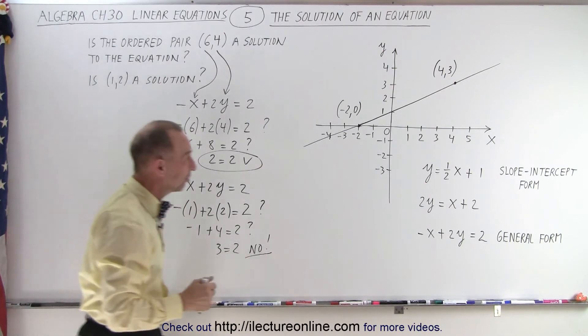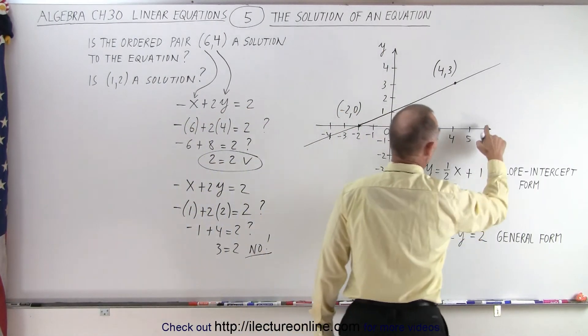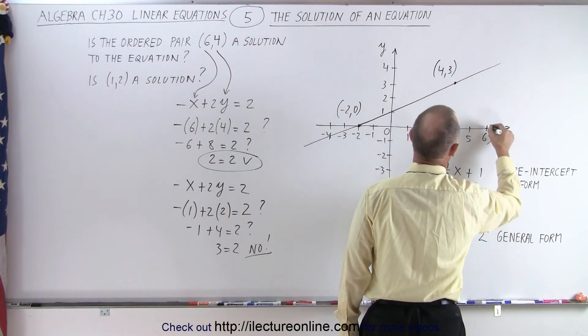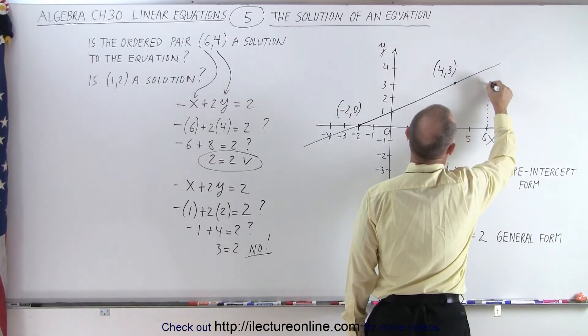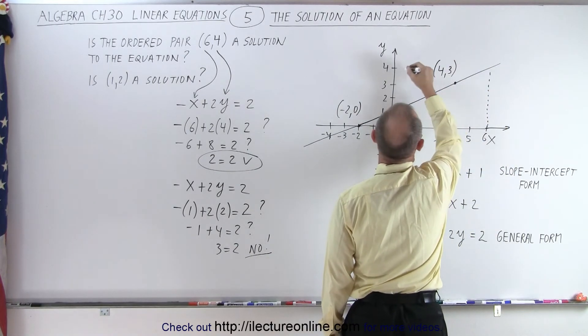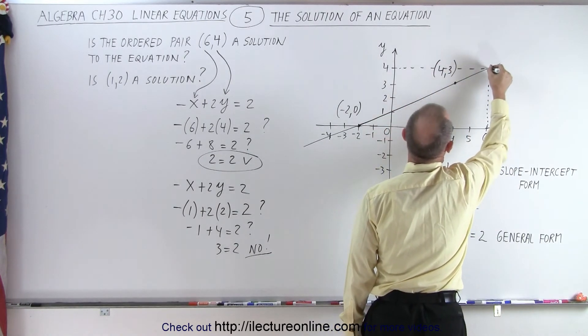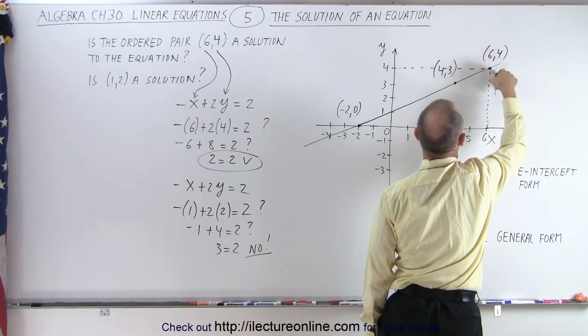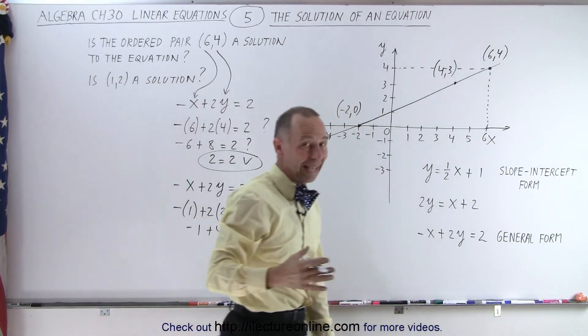Let's find our two points and see what we have. So we need to make this line a little bit longer. Here's our 6. Let's go up here. And then here, this is the number 4. So this is indeed the point (6, 4). And you can see that that is indeed on the line. So therefore, that was a solution.